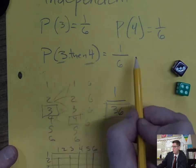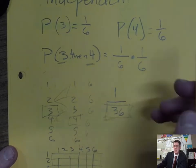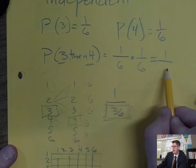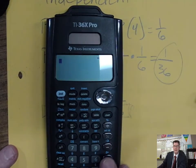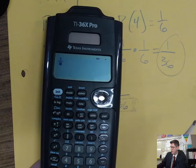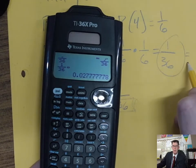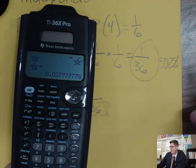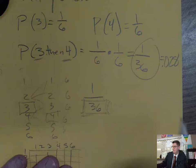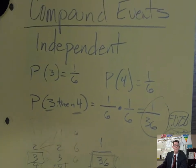The way to solve this: find the probability of the first event — that's one out of six. Then find the probability of the second event — that's also one out of six. Then multiply them together: one times one is one, and six times six is 36. So the probability is 1/36. The decimal equivalent is one divided by 36, which is approximately 0.028, or 2.8 percent — three different ways to write a probability.